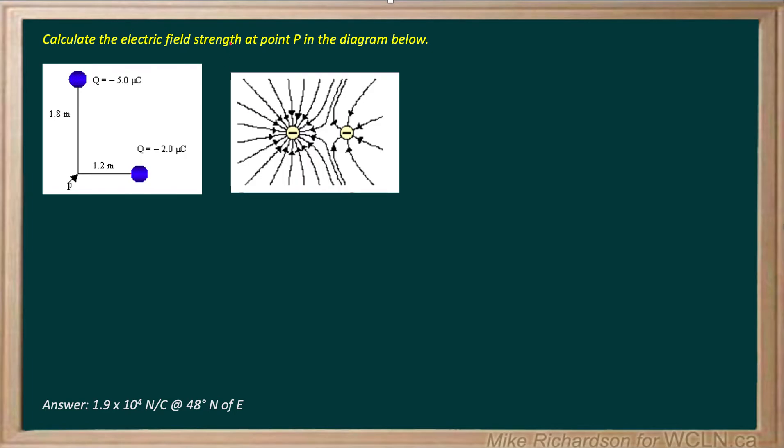We want to calculate the electric field strength at point P in our diagram. So we're looking for the strength of the electric field due to these two negative point charges at this location. Electric field is a vector, so we're likely going to have to do this tip to tail or maybe with components at the end.